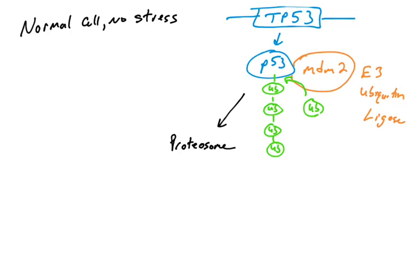So p53 is normally, in normal cells under no stress, destroyed very rapidly. It has a half-life of anywhere between 15 and 30 minutes. So p53 is constantly being made and destroyed in the cells.